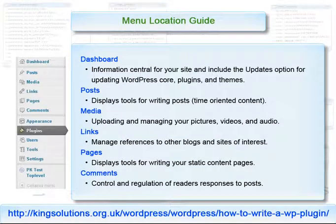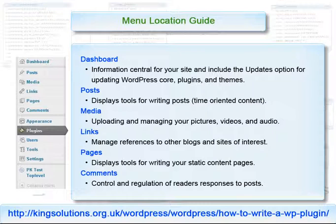WordPress suggests the following guide for determining the correct location for your menu items. The dashboard: the only top-level menus which should be placed on the dashboard are those central to the operation of your site, an application for example. The menu structure should contain everything which relates to the application, including update options. The posts menu should contain tools for writing posts which are time sensitive. The media menu should contain tools for updating and managing your pictures, videos, and audio. The links menu should contain tools for managing references to other blogs and sites of interest. The pages menu should contain tools for writing your static content pages. The comments menu should contain tools for the control and regulation of readers and responses to posts.